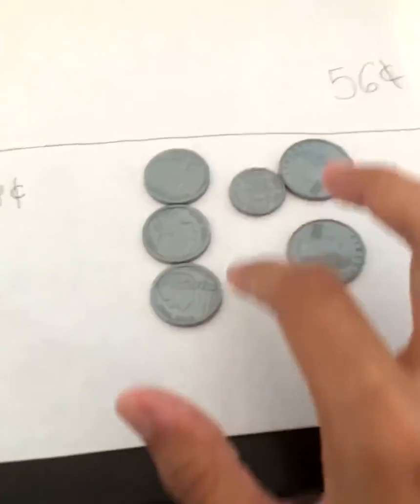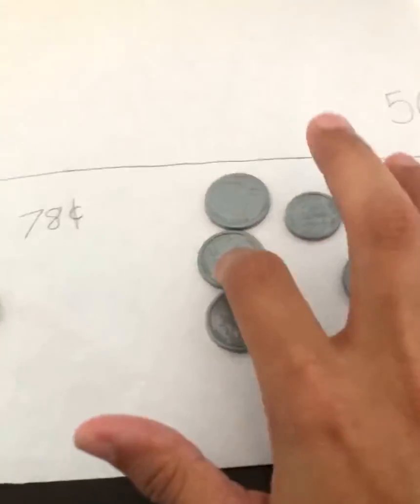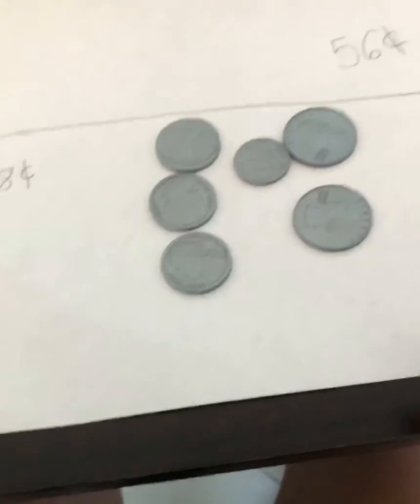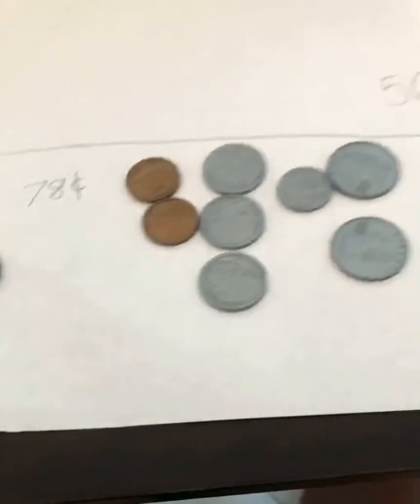So 50, 60, 65, 70, 75. I'm going to have three pennies next to make 78.